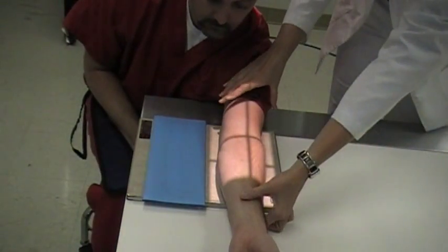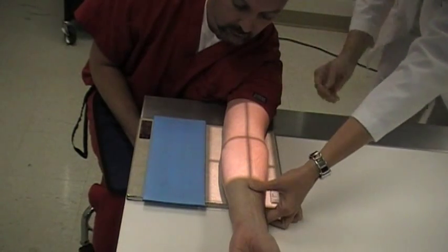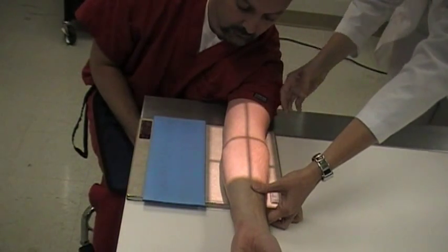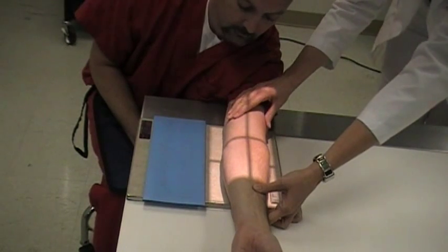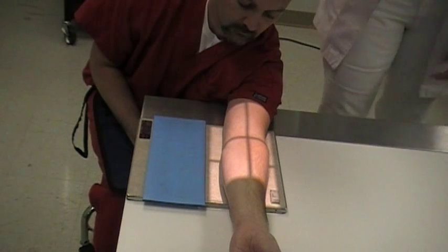So have the patient's arms straight out, hand supinated. Make sure that the humerus is down touching the cassette. And then your central ray is going to enter right at the bend of the elbow.